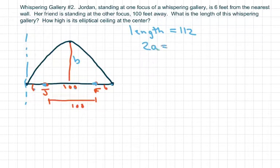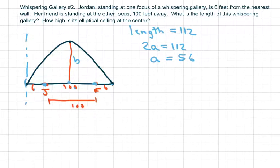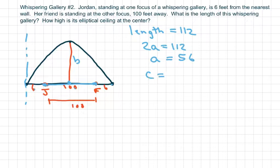So 2a equals 112, so your a is actually 56. And c, the distance from the center to the focus, is 50, because if this is 100 feet, half of 100 feet... so my foci, my c, is going to be 50.